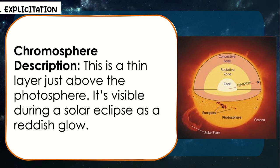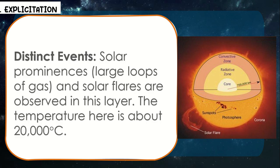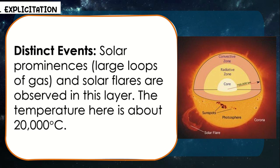For the chromosphere: this is a thin layer just above the photosphere. It's visible during a solar eclipse as a reddish glow. Solar prominences — large loops of gas — and solar flares are observed in this layer. The temperature here is about 20,000 degrees Celsius.